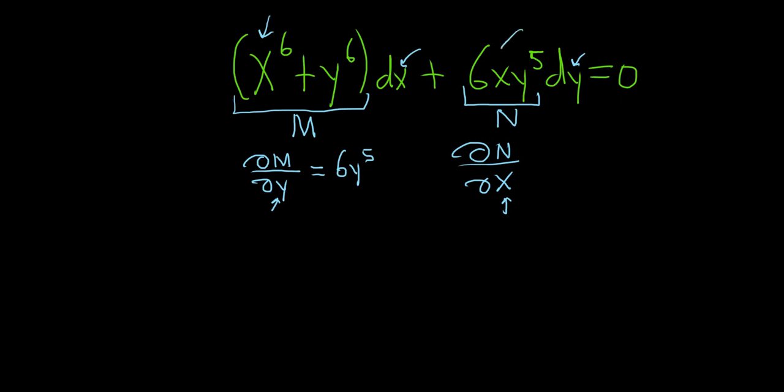So when we take this derivative, the derivative of X is one, so we're left with 6Y to the fifth. These are the same, so this differential equation is said to be exact.